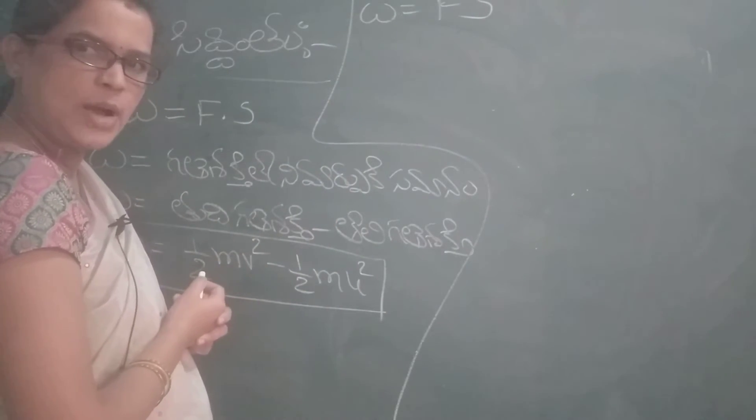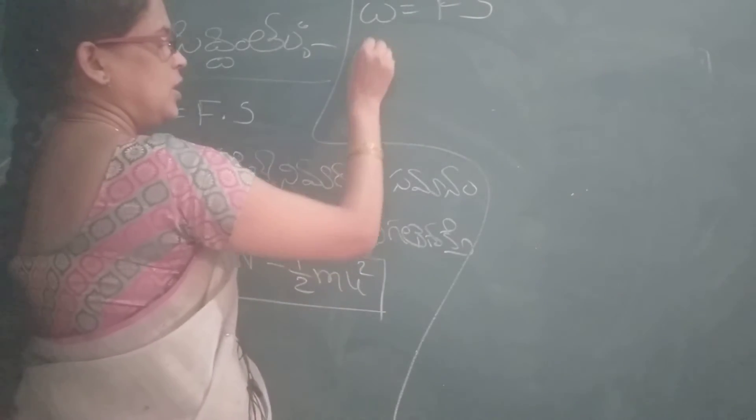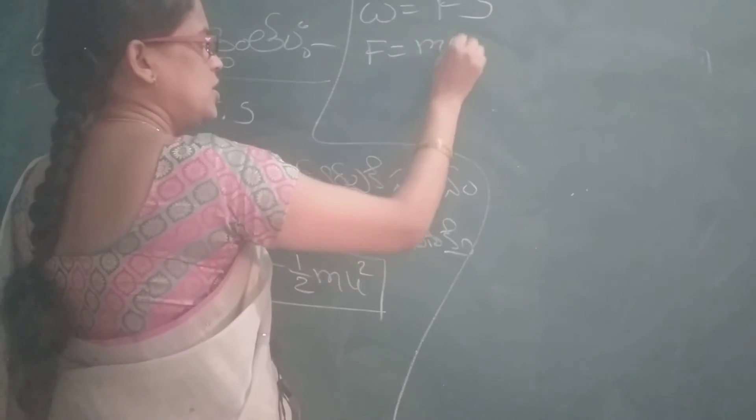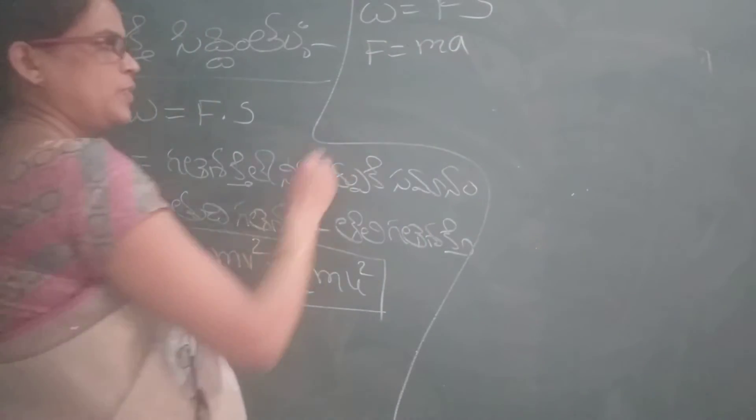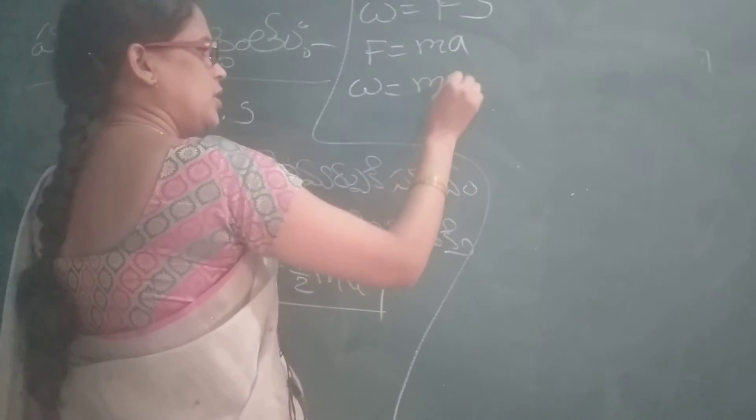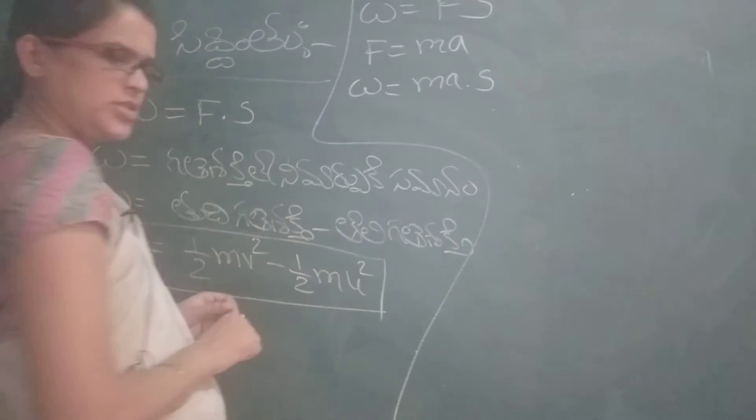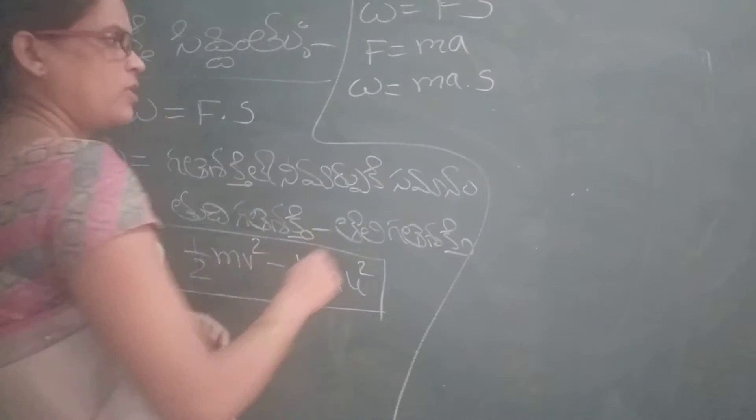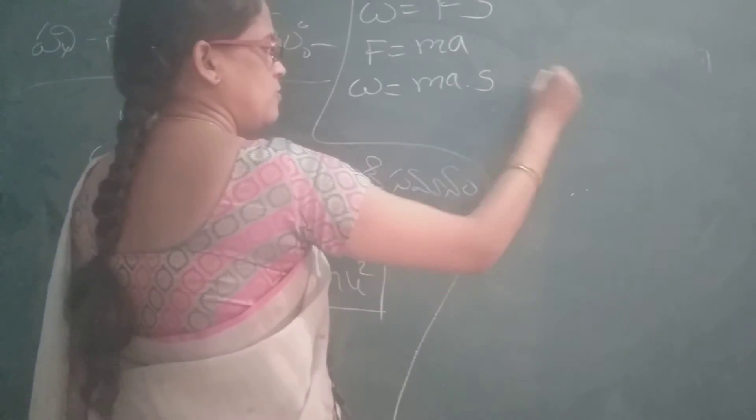W is equal F.S. Newton rendabha gaman niyama prakaram. F.V. P.K.O.L. Young A. Then W is equal Young A.S. Equation number 1.